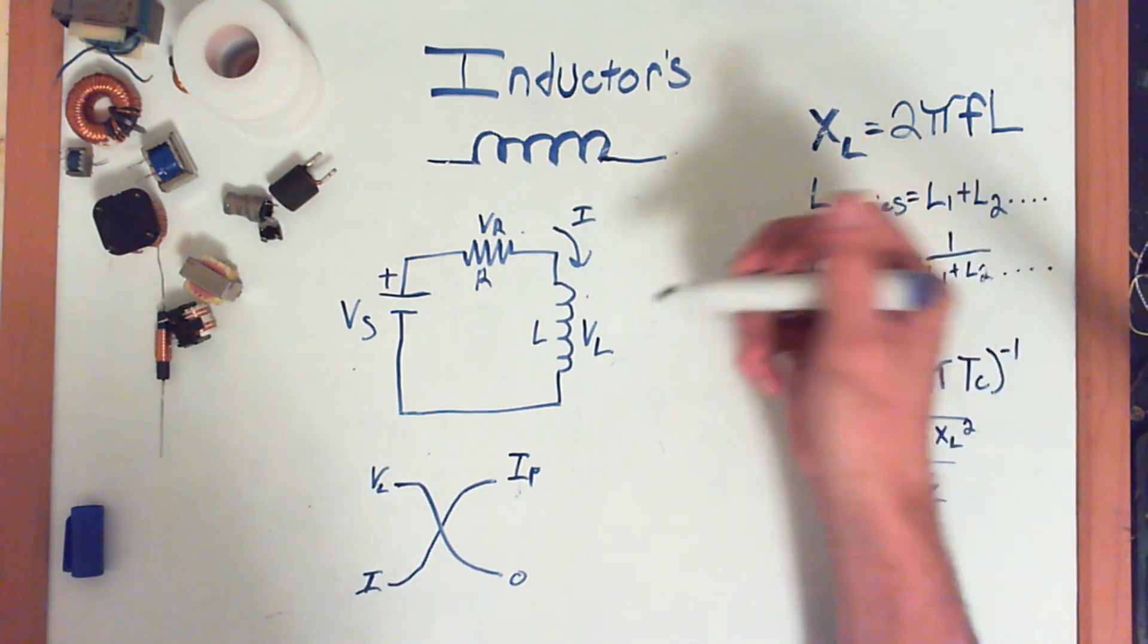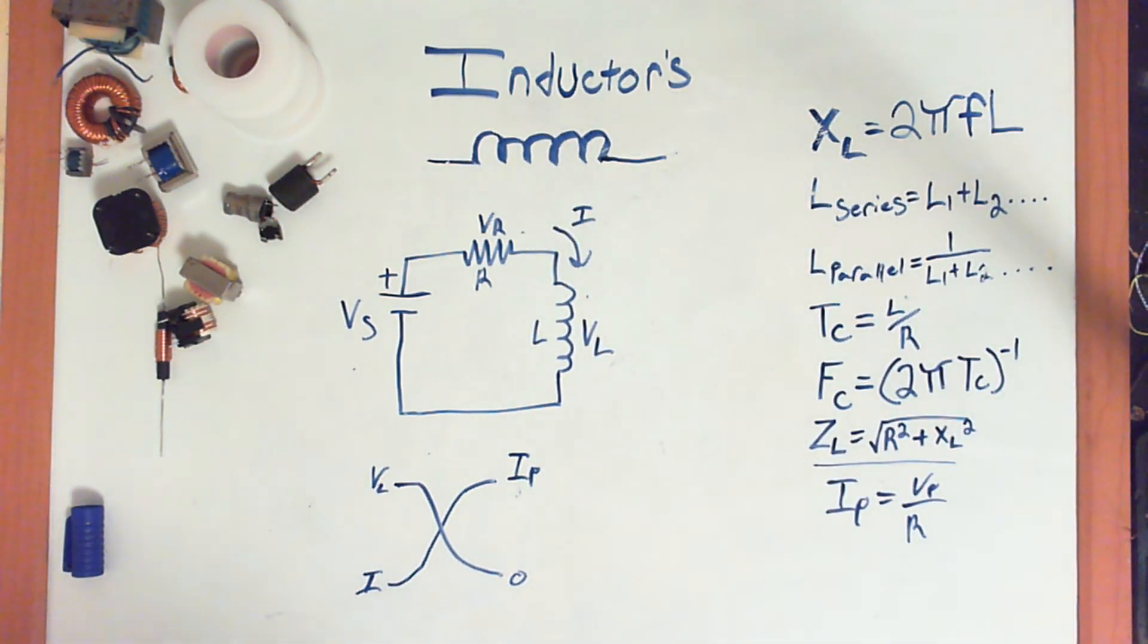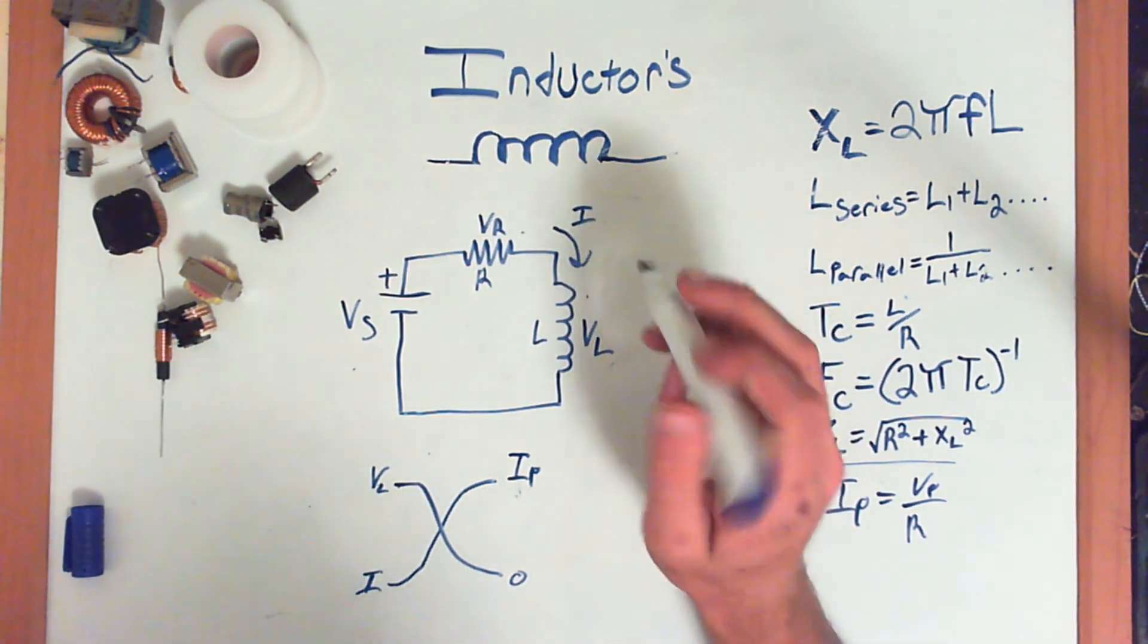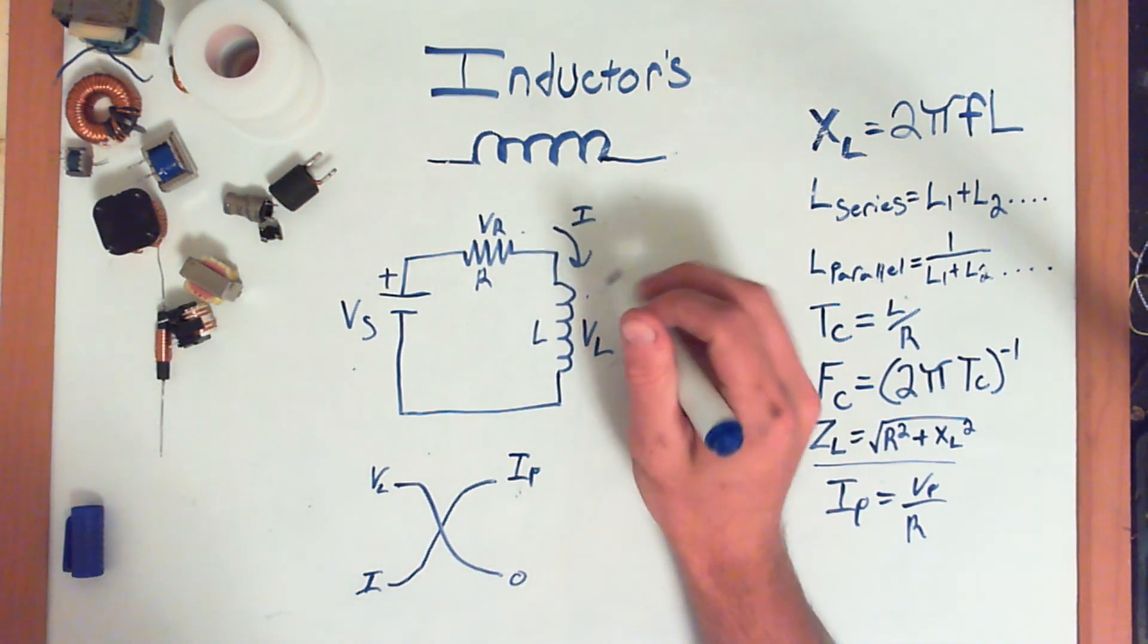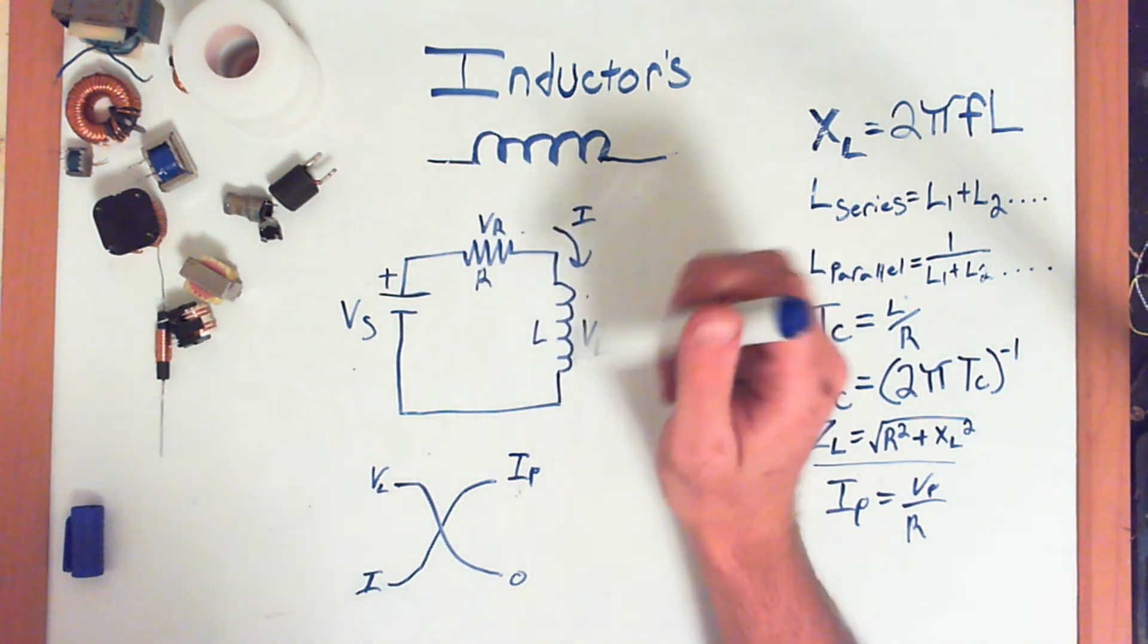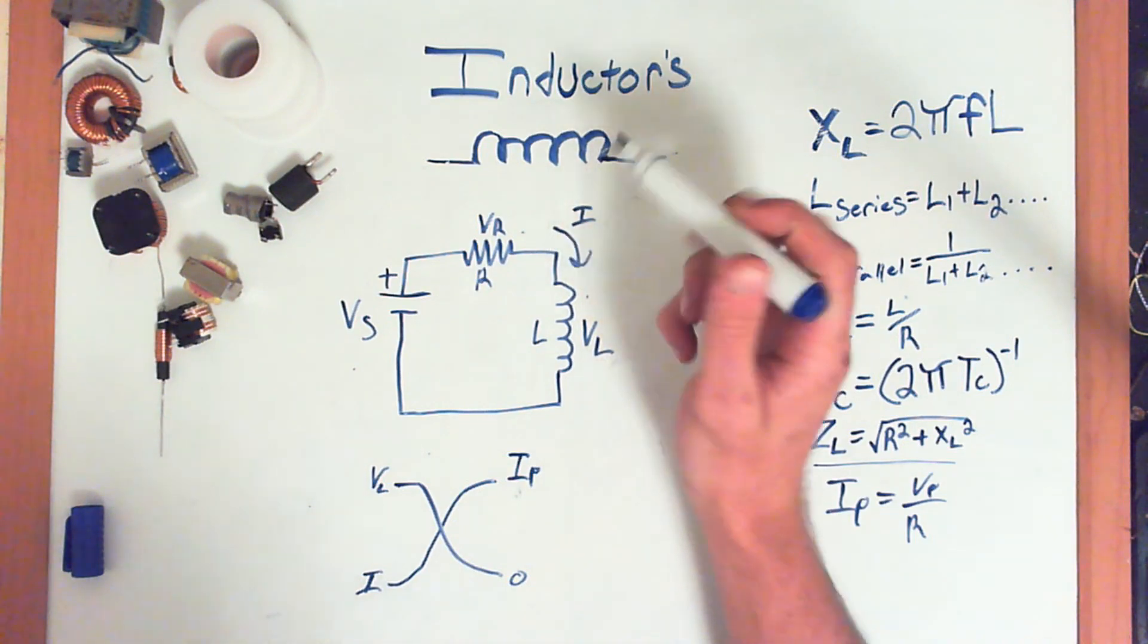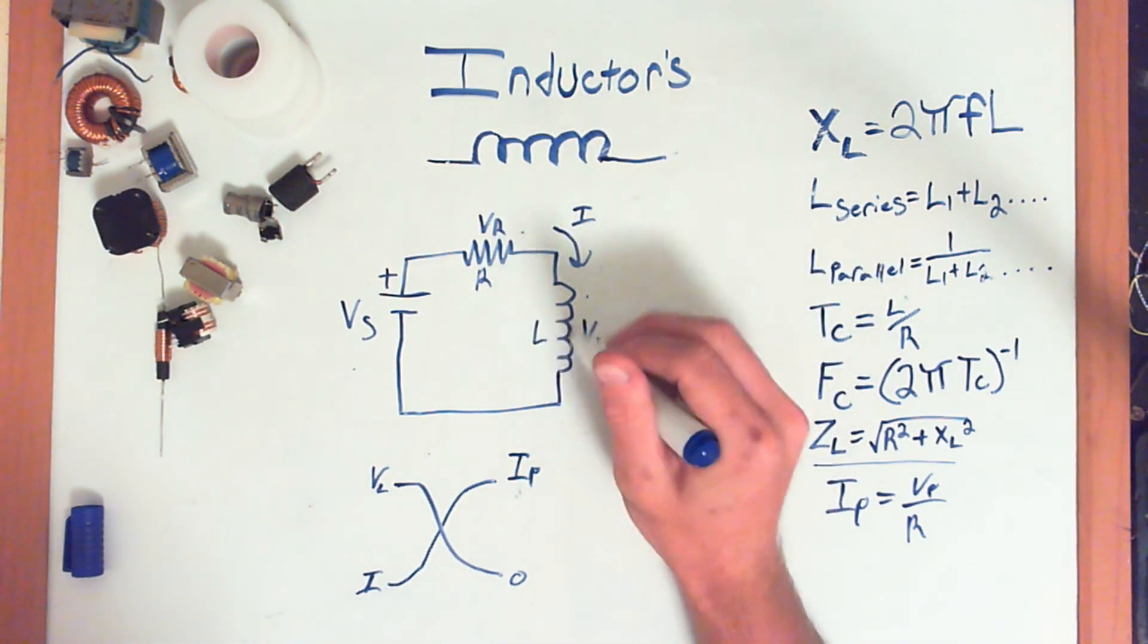So, inductors resist the change in current, just like capacitors resist the change in voltage. So, what that means is, an inductor starts off with zero current. So, it doesn't want to change. So, when we connect our battery into the circuit, we're going to start off with just a little bit of current flowing through here.